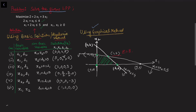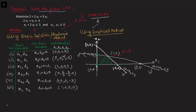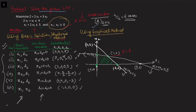Now if I solve this by the basic solution or algebraic method, the first thing I need to do is write the system as Ax = b, so I must have equality constraints. To get equality constraints I introduce slack and surplus variables. Once I do that, the matrix A has two constraints and four decision variables, so I can form C(4,2) = 6 cases for the basic solution. Some variables are basic and the remaining are non-basic.